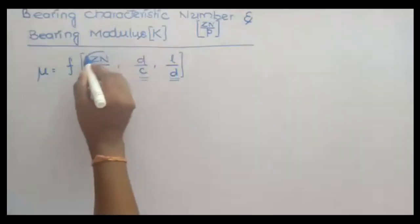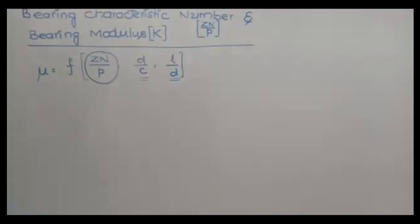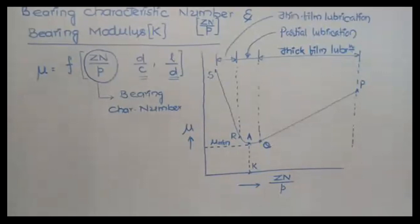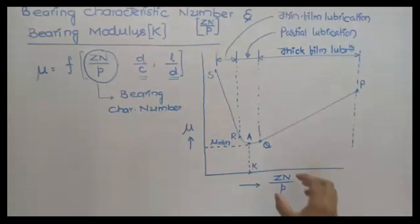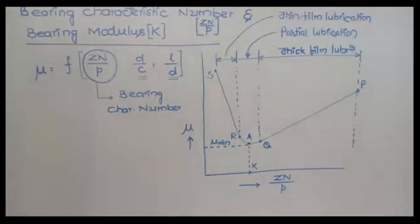The most important parameter in the coefficient of friction calculation is the zn/p value. zn/p is known as the bearing characteristic number. It is called the bearing characteristic number because it characterizes or gives the behavior of the bearing — it characterizes the performance of the bearing.